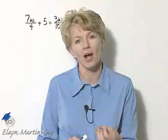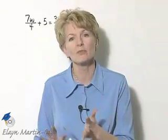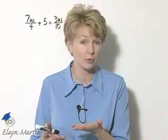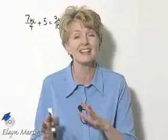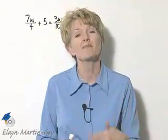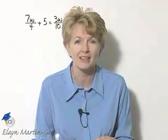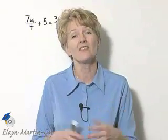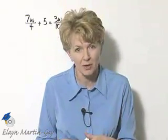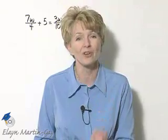Then we'll use the addition property to move like terms on one side of the equation, for example, variable terms on one side, constants on the other. Make sure you check to see if you have any like terms that can be combined before that. And then finally, you'll use the multiplication property to solve for your variable.